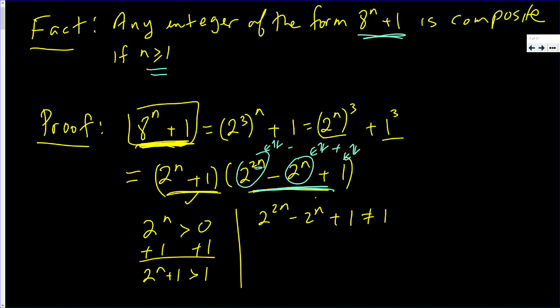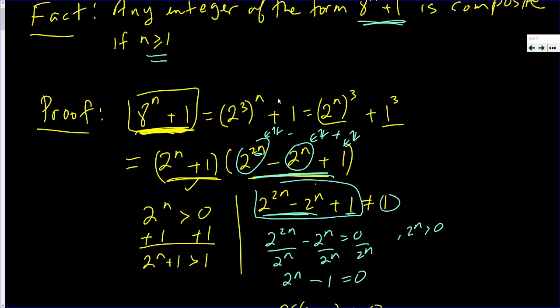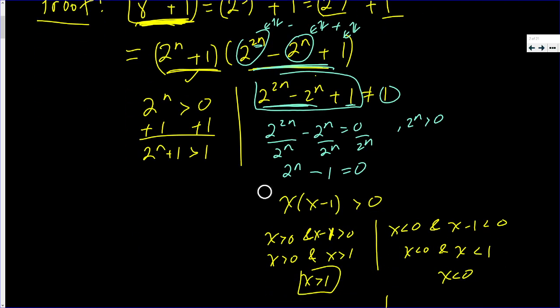Even if it's negative, it's an integer. So I just need to show that this is not 1. We need 2^(2n) - 2^n + 1 ≠ 1. We all know that 0 + 1 = 1, so we don't want 2^(2n) - 2^n = 0. Since 2^n > 0, I can divide by 2^n. So I get 2^n - 1 = 0.